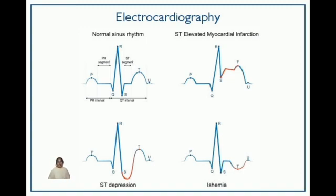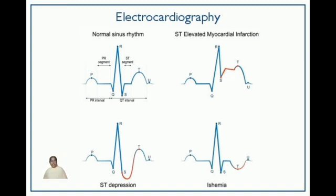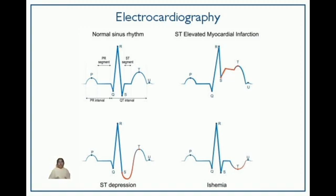One of the fundamental components of the ECG is the P-wave, which represents the electrical depolarization of the atria. Following this, the QRS complex illustrates the depolarization of the ventricles, while the T-wave signifies the atrial repolarization.